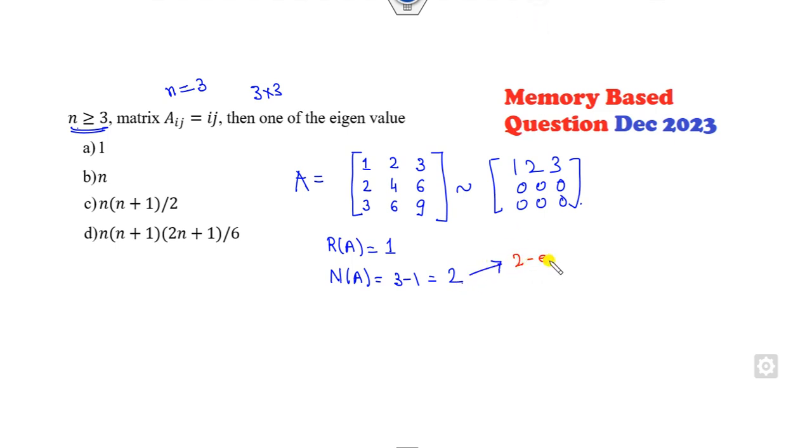What does the meaning of nullity 2? It means it has two eigenvalues with the values 0, 0. So therefore it has three eigenvalues: two eigenvalues are 0. What is the third eigenvalue? Third eigenvalue is the trace, so the trace will be 1 + 4 + 9 = 14.